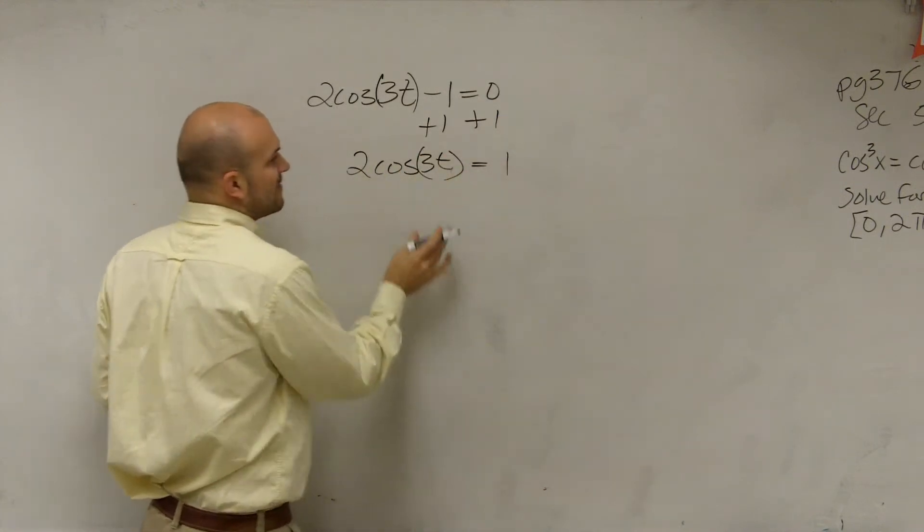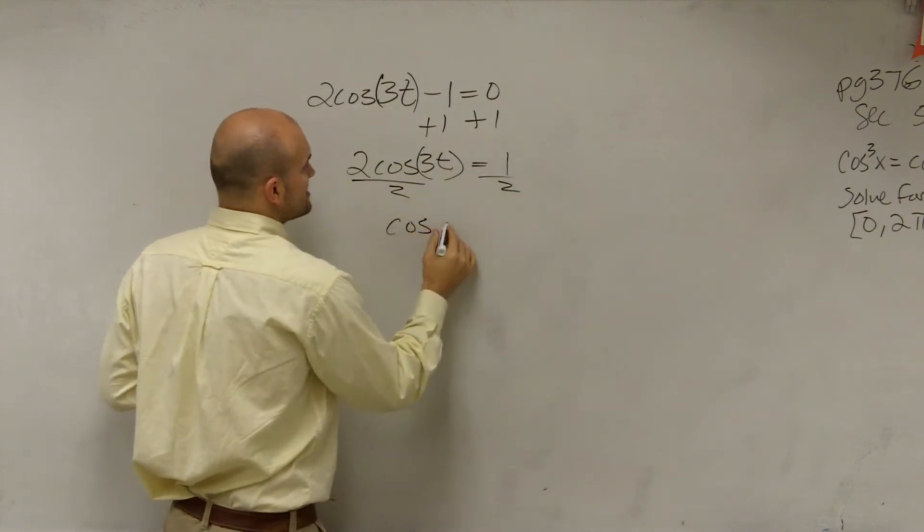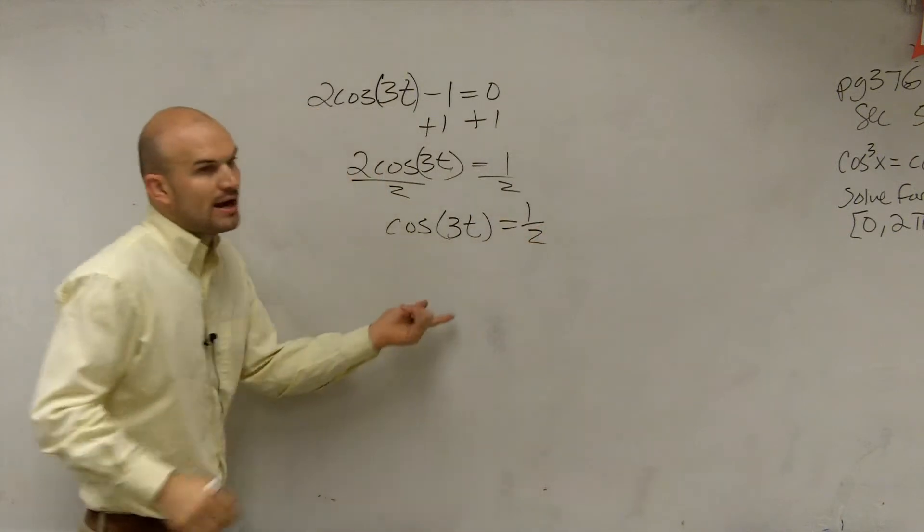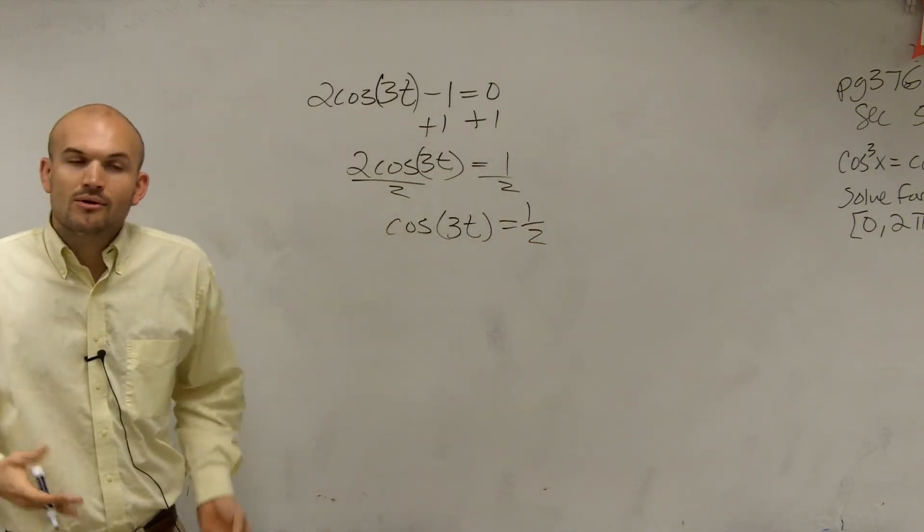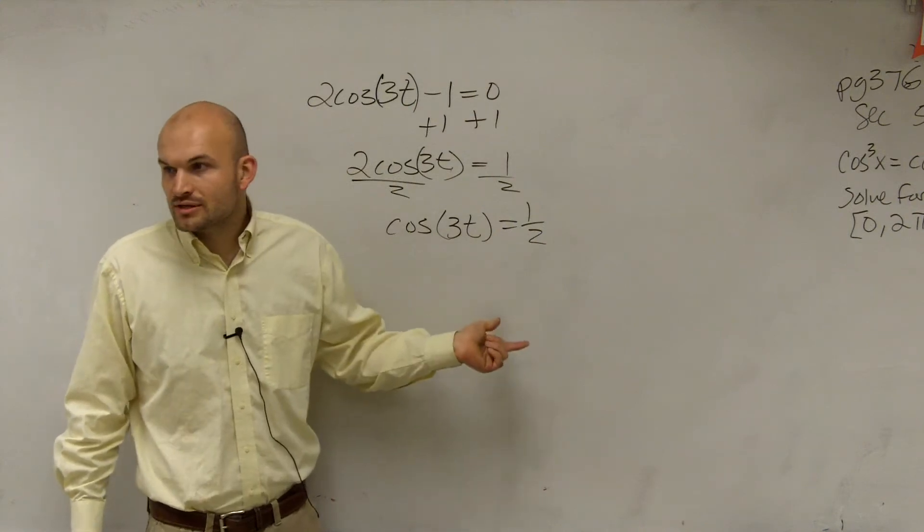Just remember that 3t is inside there because the biggest mistake that a lot of students are going to want to make is they're going to say, why don't you divide by 3 right now? Well, we can't divide by 3 because that's taking the cosine of that function. It's like doing this.